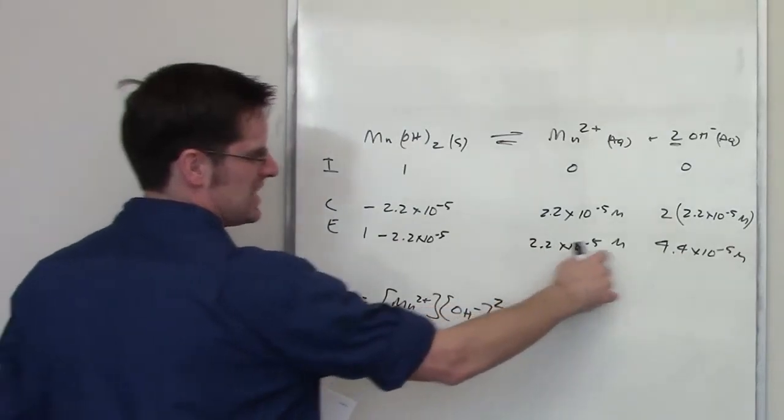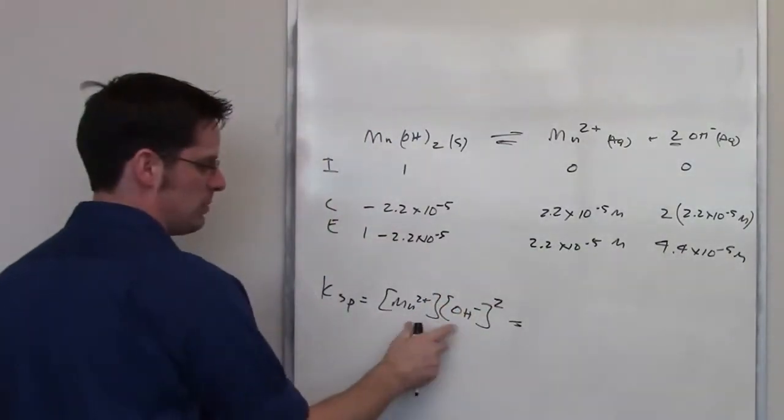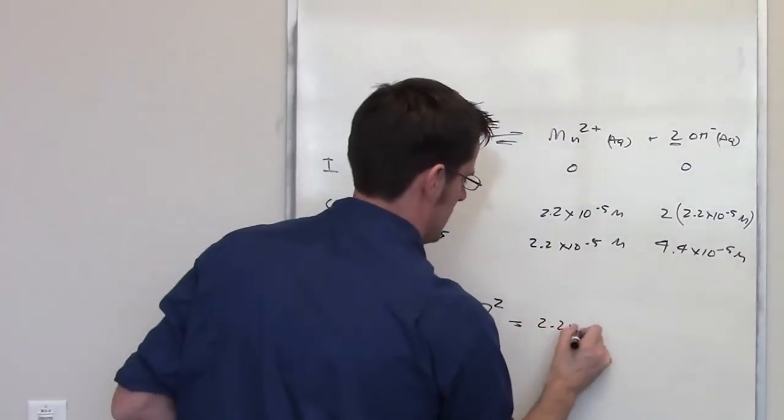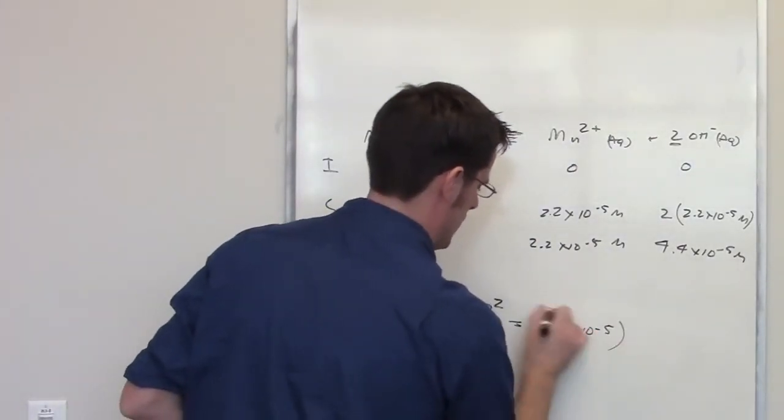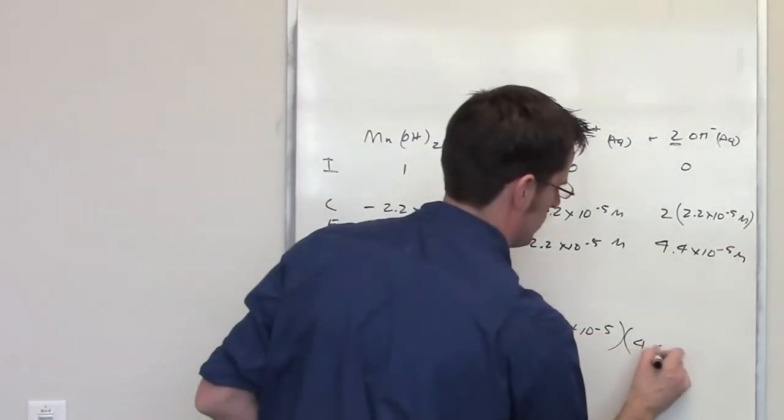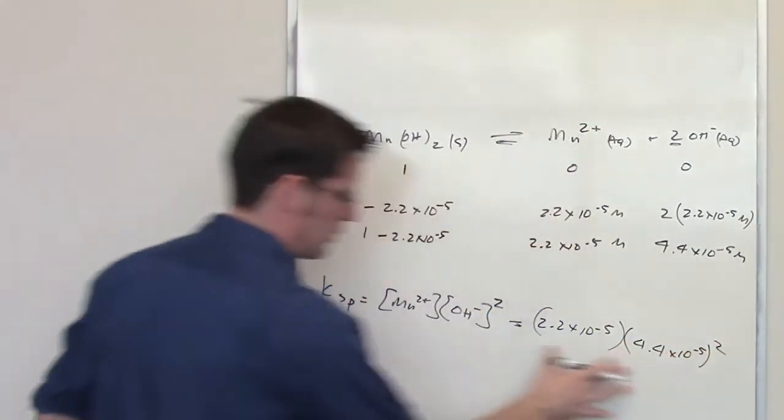So all I have to do is take these values and throw them in for the corresponding places here. So manganese cation concentration equilibrium goes right there. I multiply it by the hydroxide concentration of 4.4 times 10 to the negative fifth, and I have to square that term. You throw that in your calculator, that will give you the final Ksp for this equilibrium setting.